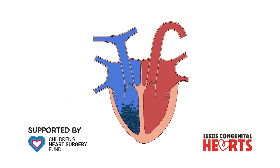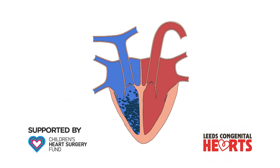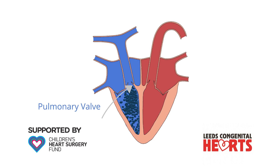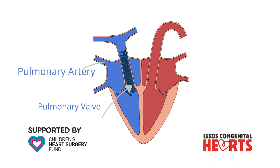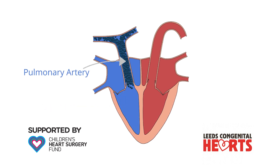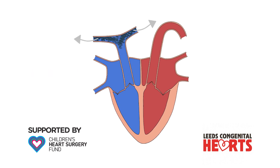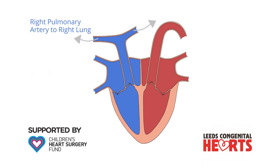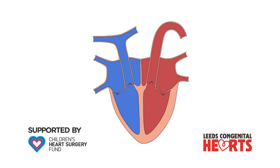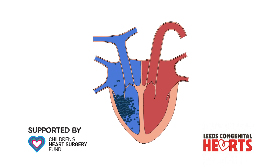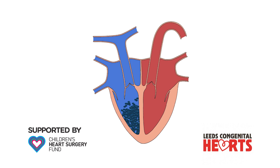The right ventricle pumps blood through another one-way valve, the pulmonary valve, into the pulmonary artery. The pulmonary artery then divides into two. The right pulmonary artery takes blood to the right lung, and the left pulmonary artery takes blood to the left lung. So, the right side of the heart takes blood that is low in oxygen from the body and pumps it to the lungs.